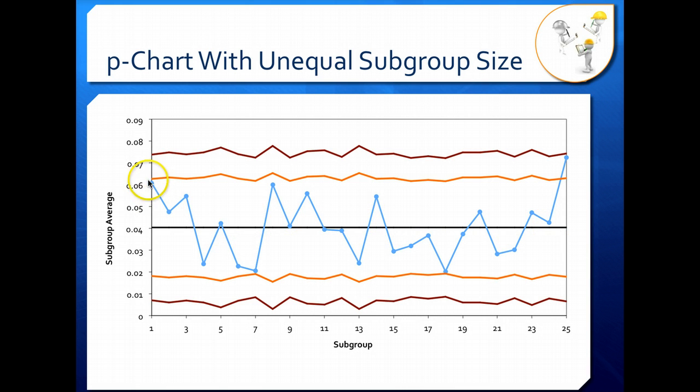But as our subgroup size changes, our control limits, you can see them start to get a little bit wiggly. So they're changing with our sample size.